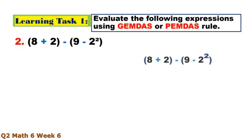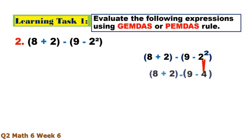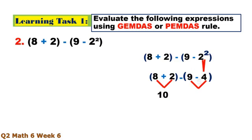Number 2. In this expression, using PEMDAS, we need to solve first the operations inside the parenthesis — that is the exponent: 2 to the second power is 4. Then inside the parenthesis: 9 minus 4 equals 5. Then the remaining parenthesis: 10 plus 2 gives us context, then subtraction: 10 minus 5 equals 5.